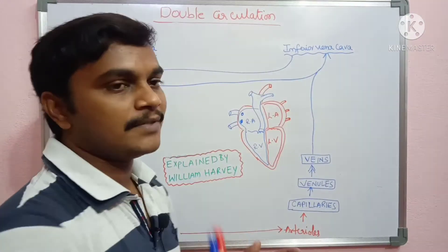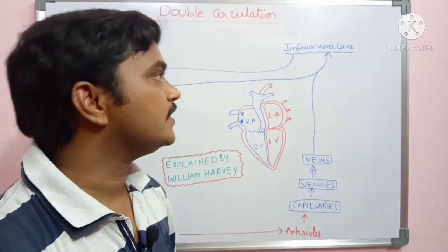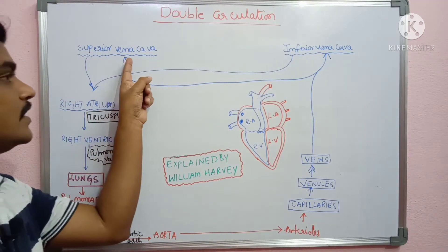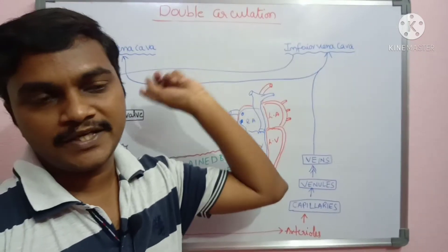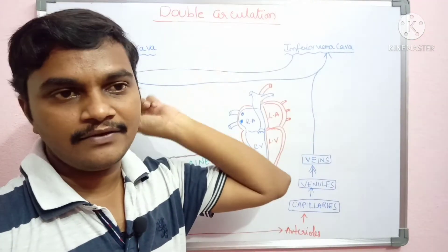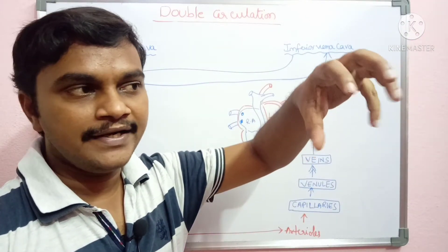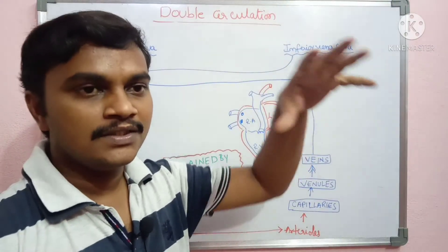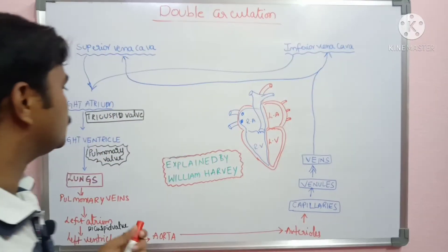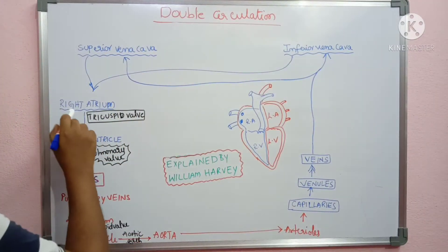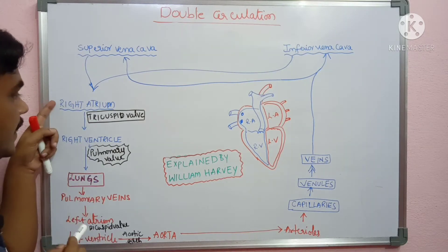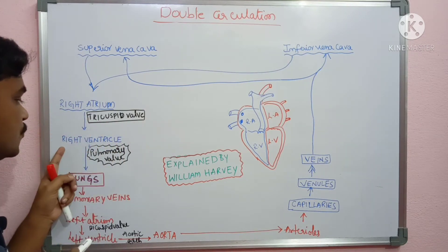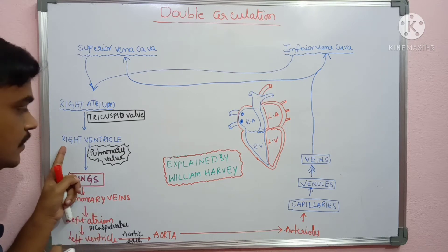Let's see how we put it together. Starting with the right atrium — the superior and inferior vena cava, also called pre-caval and post-caval veins, bring deoxygenated blood. That is why it is shown in blue. Deoxygenated blood enters the right atrium, and from there, with the help of the tricuspid valve, it enters the right ventricle.